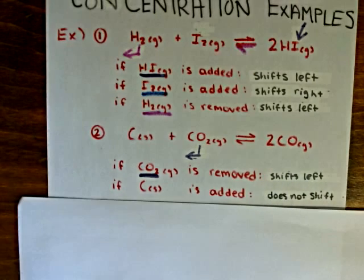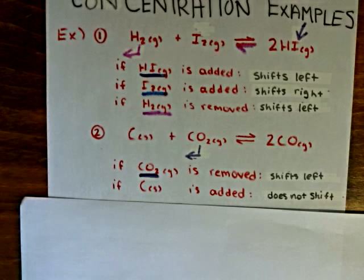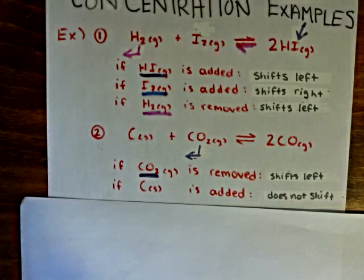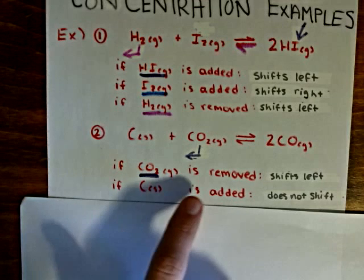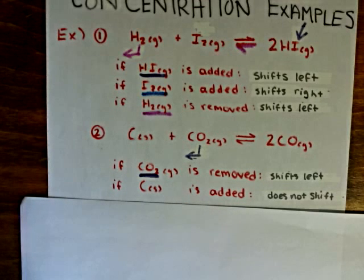However, just as an additional note, in the real world, if we add more carbon, what that actually does is decrease the volume, and therefore shift the side of the reaction with the fewer number of moles of gas. So in actuality, the reactant side would be favored. But if you're ever asked a question such as this, you can be sure that they're not looking for an answer like that. Just remember, solids and liquids will not shift a chemical equilibrium.